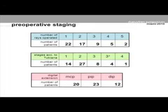Preoperative staging used three ways. First, the number of operated rays: 22 patients with one ray, 17 patients with two rays, nine patients with three rays, five with four, and two with five rays operated.